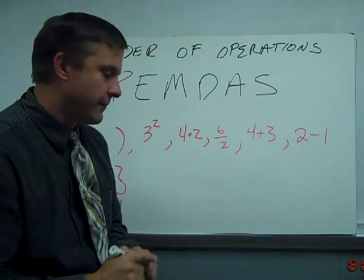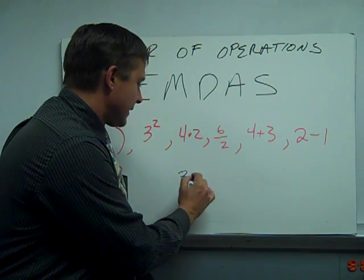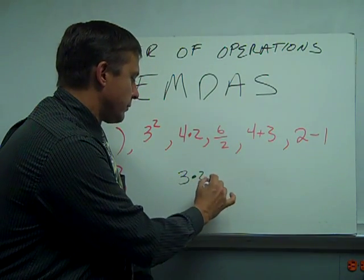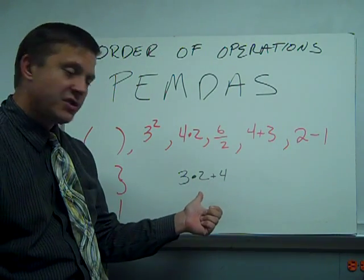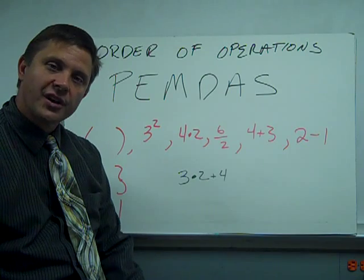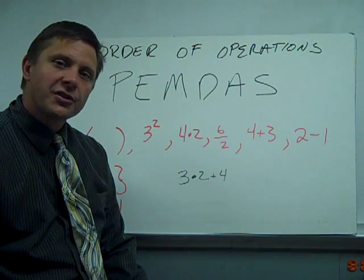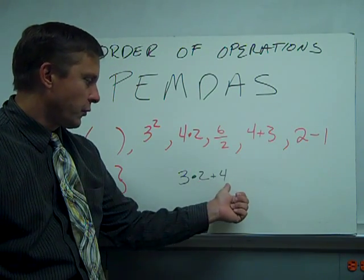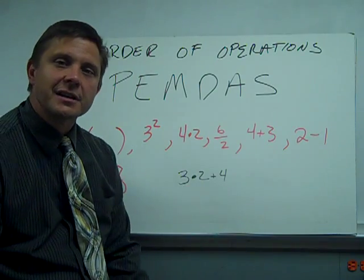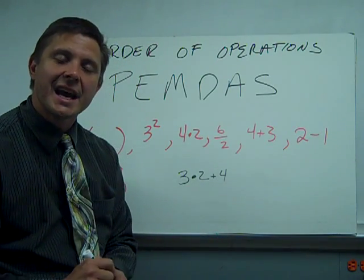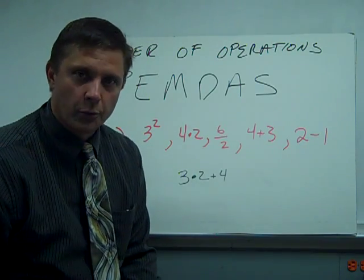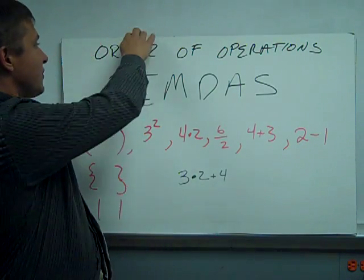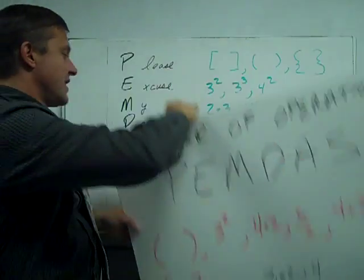And we have to have this because if I write 3 times 2 plus 4, we have to all do it the same way so we get 3 times 2 is 6, 6 plus 4 is 10. Because if we don't all do it the same way, 2 plus 4 is 6, 6 times 3 is 18. 18 and 10 are not the same. We have to have this. And again, this was decided long before any of us were born, even me.